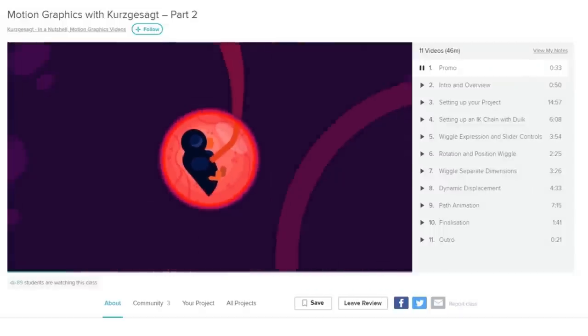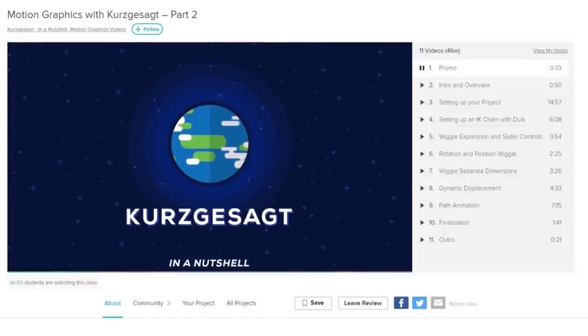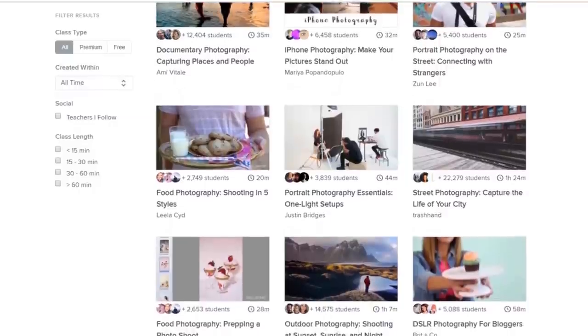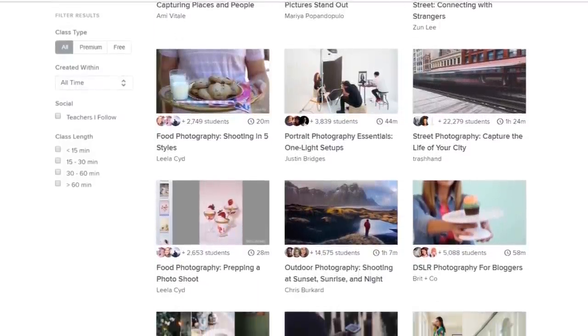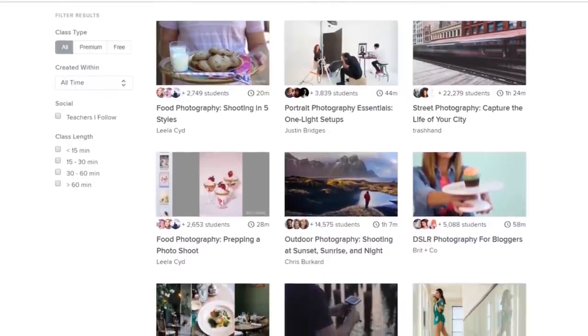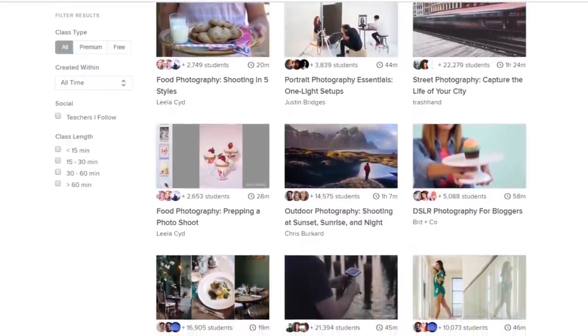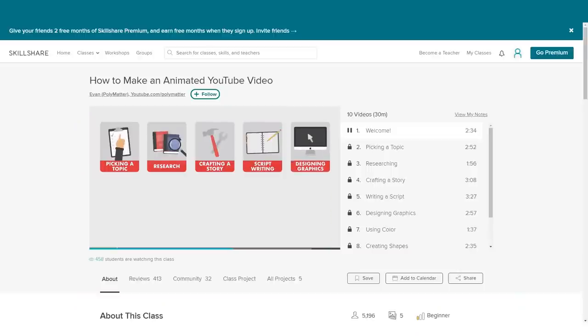I love Skillshare because anytime I'm bored I can just put on a class and learn something worthwhile. A premium membership gives you unlimited access to high-quality classes on useful topics, so you can improve your skills, unlock new opportunities, and do the work you love. I highly recommend you check out this course from Polymatter. It's all about how to make animated YouTube videos, and it's amazing.